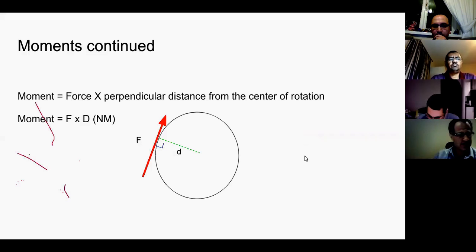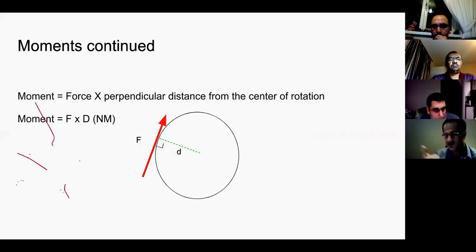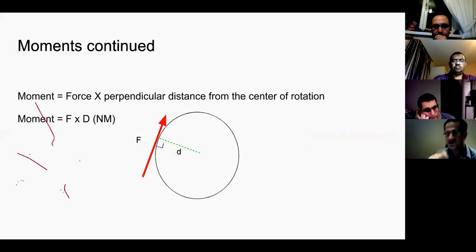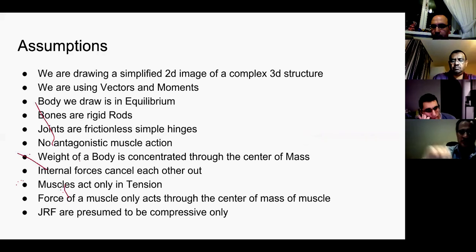Moment is equal to force multiplied by the perpendicular distance from the center of rotation. You'll notice a small blue right-angle symbol on the drawing — that's the mathematical symbol for perpendicular. The distance is the green dotted line from the center of rotation, and 'd' is perpendicular to the direction of force. This is a very important concept, as a lot of textbooks and descriptions misdraw this.